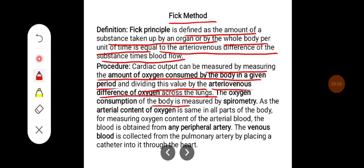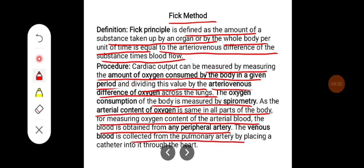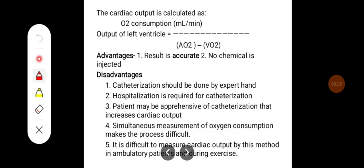The oxygen consumption of the body is measured by spirometry. As the arterial oxygen content is the same in all parts of the body, for measuring oxygen content of the arterial blood, blood is obtained from any peripheral artery. The venous blood is collected from the pulmonary artery by placing a catheter into it through the heart. Cardiac output from the left ventricle equals oxygen consumption in ml per minute divided by the arteriovenous difference of oxygen.